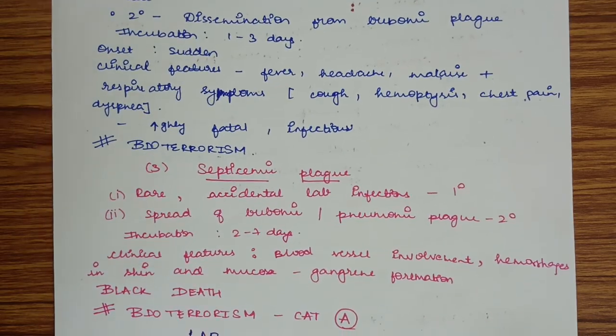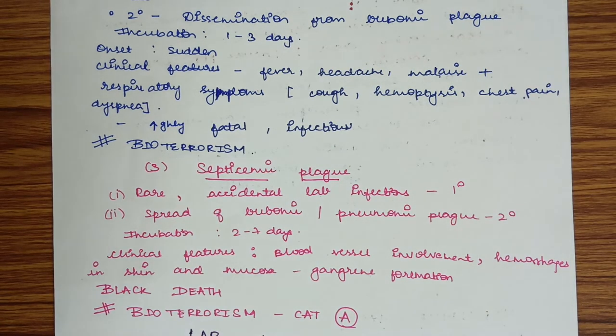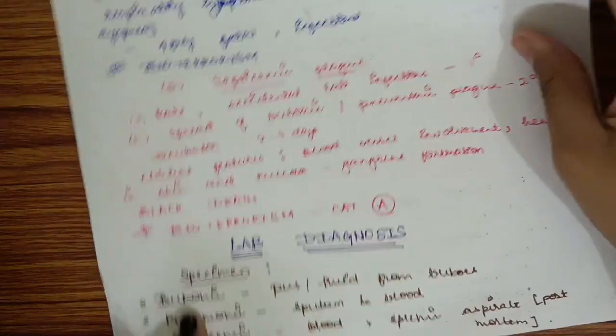Septicemic plague is also primary or secondary. Primary septicemic plague is rare, generally transmitted by accidental lab infections. Secondary septicemic plague is due to dissemination of bubonic or pneumonic plague. Incubation period is two to seven days. Clinical features include blood vessel involvement, hemorrhage in skin and mucosa, leading to gangrene. It can lead to black death. It is an agent of bioterrorism category A, the most dangerous category.